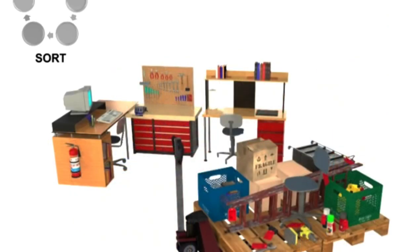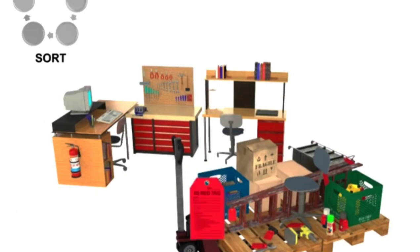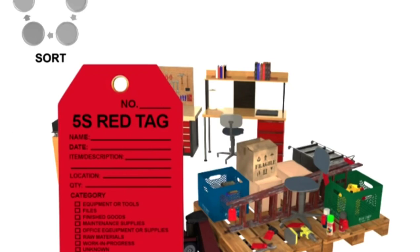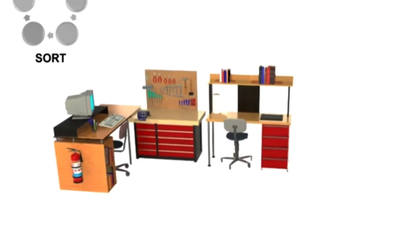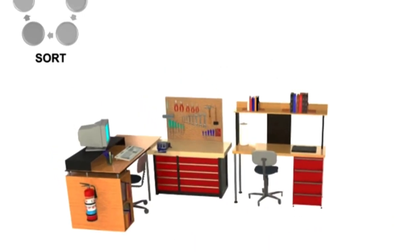The Red Tag portion of the Sort phase involves filling out and marking the unneeded items with a tag showing that it needs to be moved out of the station to a holding area. Thus, the only tools left in the work area are the ones specifically needed to perform the particular tasks associated with that station.